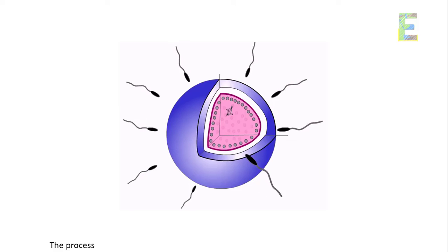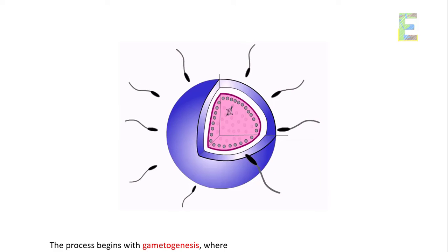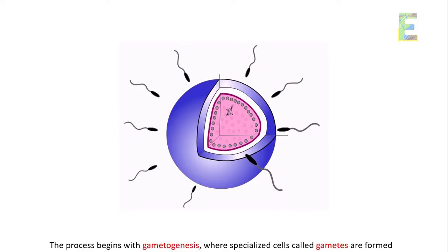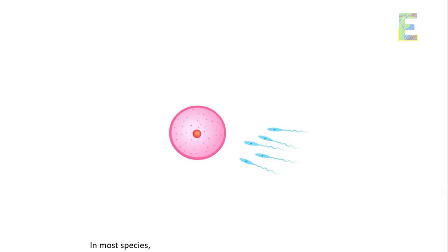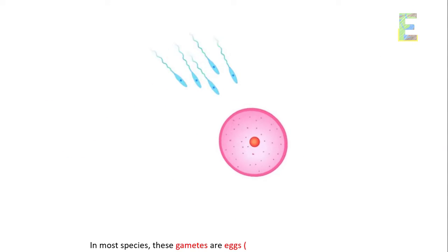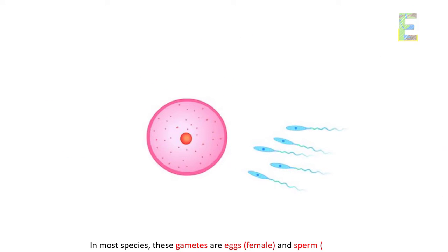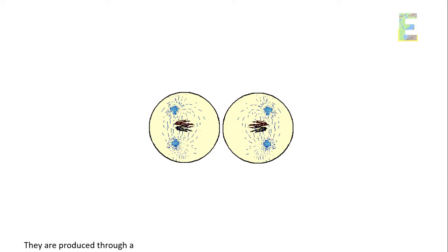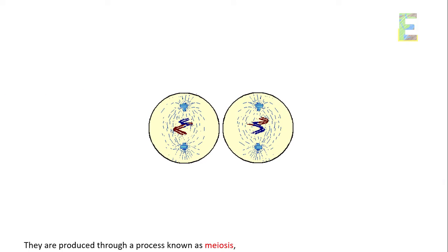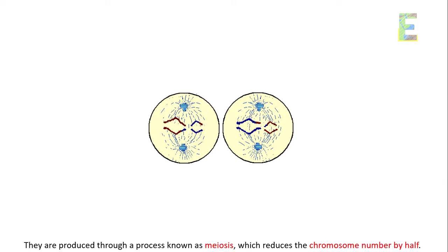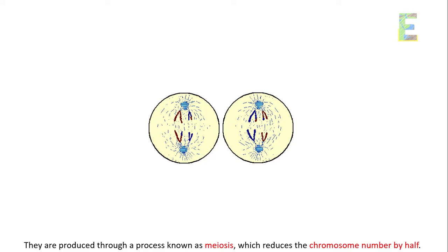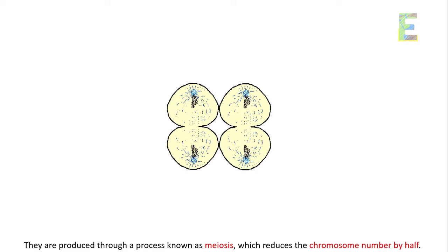Gametogenesis — the process begins with gametogenesis, where specialized cells called gametes are formed. In most species, these gametes are eggs, female, and sperm, male. They are produced through a process known as meiosis, which reduces the chromosome number by half.